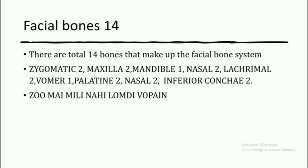Now let's go to the facial bones. There are 14 facial bones to remember. A special mnemonic to remember them: 'Zhoo mein mili nahi lombri, woh pa in.' Zhoo = zygomatic, mein = maxilla, mili = mandible, nahi = nasal, lombri = lacrimal, woh = vomer, pa = palatine, and in = two inferior conchae.